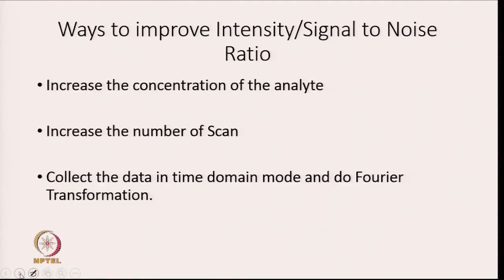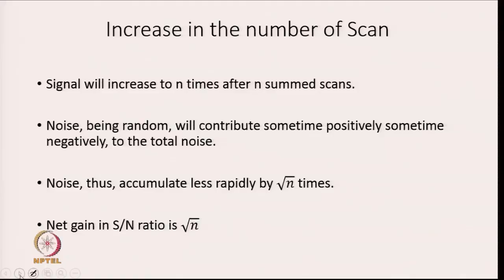As discussed earlier, NMR is a low sensitive technique, so we need to find methods to increase the signal-to-noise ratio. One way is to increase the concentration of the analyte — though this is not always possible. The second way is to increase the number of scans, collect data in time domain mode, and do Fourier transformation. If we take N scans, the signal will increase N times, but noise being random accumulates only by root N times, so the signal-to-noise ratio gain is root N times.